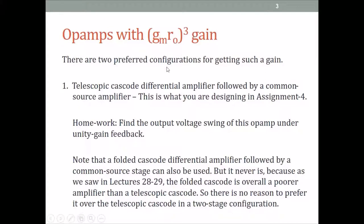There are two preferred configurations for getting such a gain. One configuration is a telescopic cascode differential amplifier followed by a common source amplifier. This is of course what you are designing in assignment 4. The telescopic cascode gives a gain of GMRO squared, followed by the common source which gives GMRO, so the overall gain is GMRO cubed. Because you are very familiar with both of these and you are designing it, we will not spend any time discussing this in class.